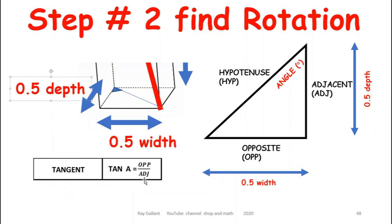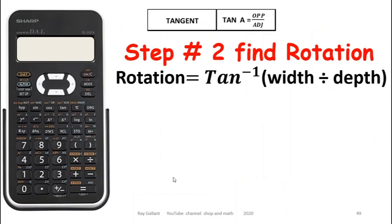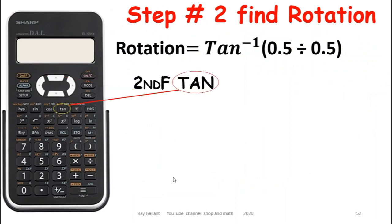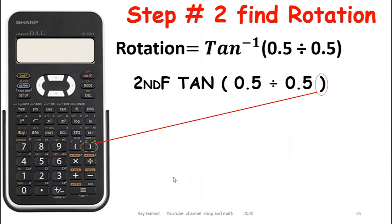I'm pretty sure you guys looking at this number you know exactly what that angle is going to be, but let's go through the numbers anyways. Tan, so we're going to go second function tan, 0.5 divided by 0.5, and we come up with 45 degrees.